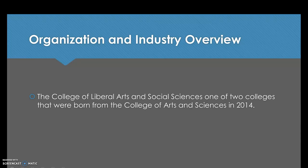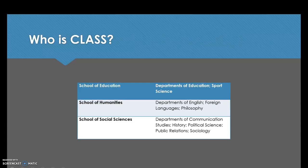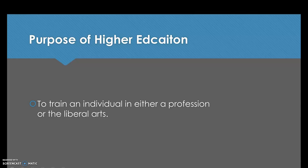It has been said that to understand anything you must understand it historically. With that in mind, here is a brief overview of the College of Liberal Arts and Social Sciences. In 2014, the College of Arts and Sciences was split into two colleges, one of which is now the College of Liberal Arts and Social Sciences. CLASS is comprised of three schools and nine departments, and is one of nine colleges that make up the whole of Belmont University.